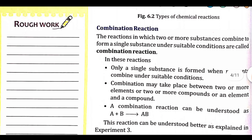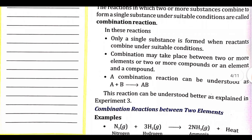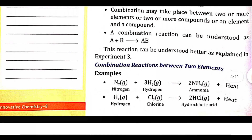Combination reactions — a reaction in which two or more substances combine to form a single substance under suitable conditions is known as a combination reaction. In these reactions, only a single substance is formed and the reactants combine under suitable conditions. The general form is: A + B → AB.